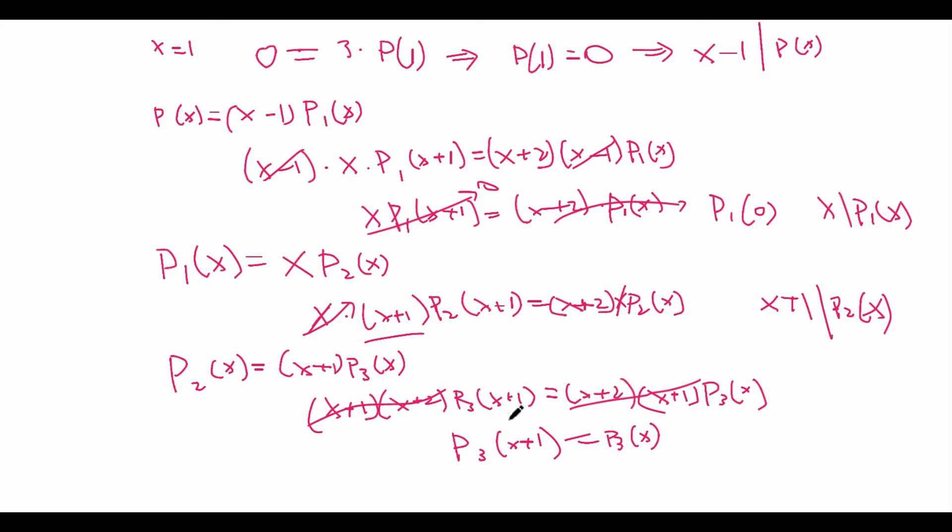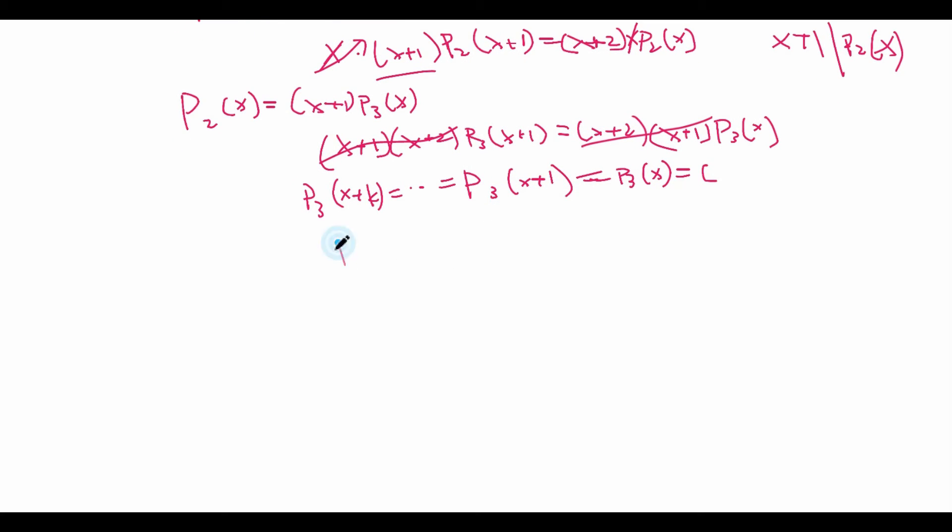Now what does this tell us? Well, this tells us that P₃ is periodic with period 1 because the value of P₃(x) is the same as the value of P₃(x+1). Let's let this be c, then inductively we can get that this is the same thing as P₃(x+k) for any integer k. And in particular, this means that P₃(x+k)-c equals 0 for all integers k. But that's not good, because if a polynomial is equal to 0 for infinitely many values, then it must be identically equal to 0, which means that P₃(x) is actually equal to c for a constant c, for all x.